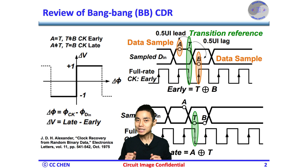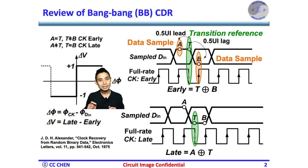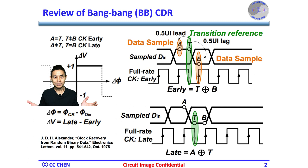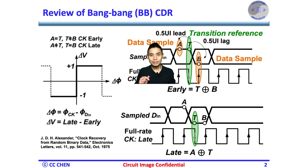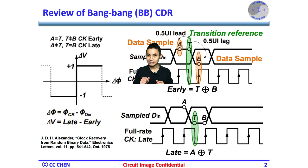Let's review the Bang-Bang CDR operation. The goal of the Bang-Bang CDR is simplicity by providing only binary plus one or minus one information over late or early clock phase, shown in the Bang-Bang transfer curve. The output voltage should be plus one to speed up the VCO if the output clock phase is late, or the phase error of the clock minus delta is positive, and vice versa.